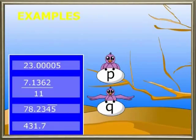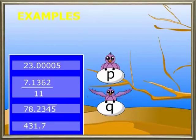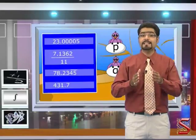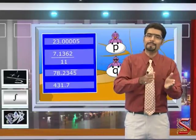Now let us see what the different types of decimal numbers are and see which ones can be included in the category of rational numbers. One: 23.00005. Two: 7.1362 divided by 11. Three: 78.2345 bar. Four: 431.7. Let us try to work together and see how these numbers can be brought into p by q form.